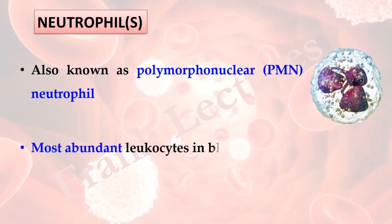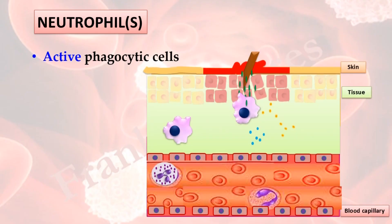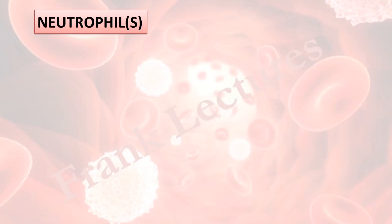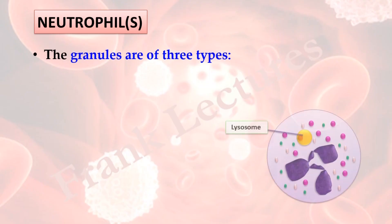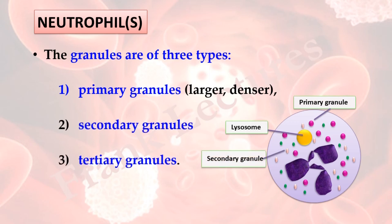Neutrophils are the most abundant leukocytes in the blood, constituting about 50–70% of blood leukocytes. Neutrophils are active phagocytic cells. They circulate in blood, but when there is an infection, they receive a signal and migrate to the site of infection from the bloodstream, where in the tissues they become the principal phagocytic cells. In neutrophils, granules are of 3 types based on their size, morphology and density. The larger and denser ones are primary granules, and the smaller ones are secondary and tertiary granules. All these granules contain antimicrobials which help in killing and digestion of phagocytosed microbes.